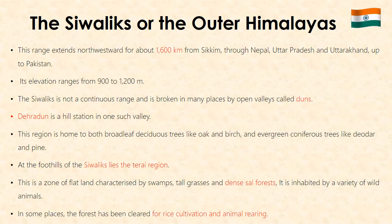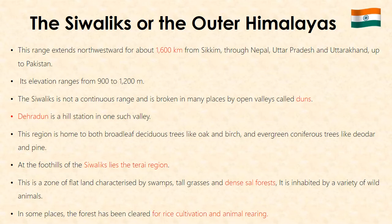The Shivalik, or the Outer Himalayas, extends northward and westward for about 1,600 km from Sikkim through Nepal, Uttar Pradesh and Uttarakhand up to Pakistan. Its elevation ranges from 900 to 1,200 meters. The Shivalik is not a continuous range and is broken in many places by open valleys called duns. The Haradun is a hill station in one such valley. This region is home to both broadleafed deciduous trees like oak and birch and evergreen coniferous trees like deodar and pine.